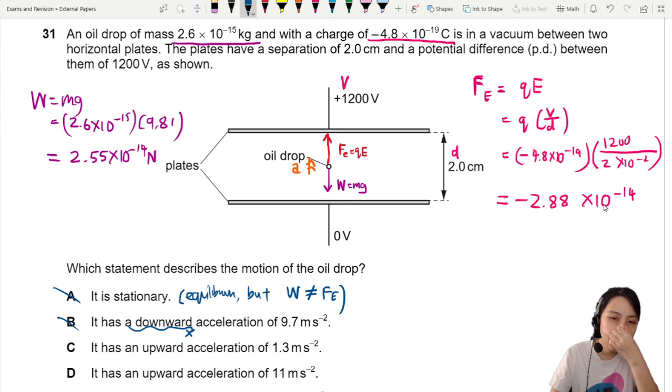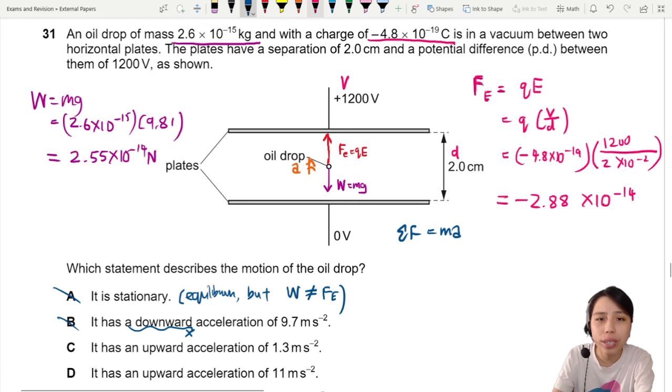Let's do a calculation newton's second law net force equals Ma. Who are the forces acting on this Fe and W. We're going to go upwards we're going to choose up as positive down as negative.